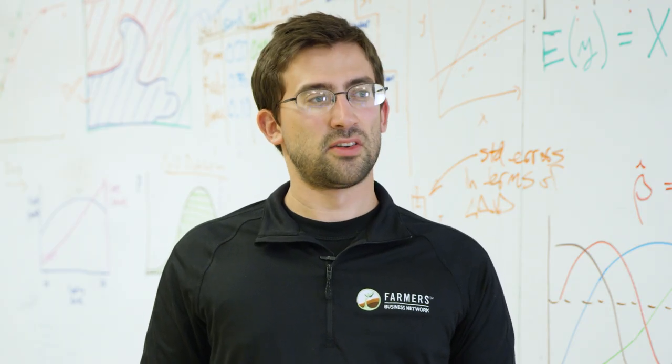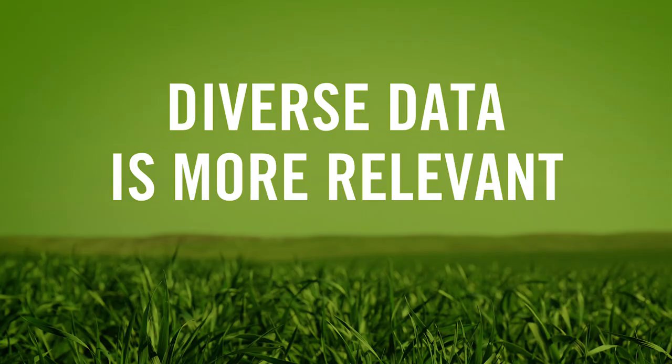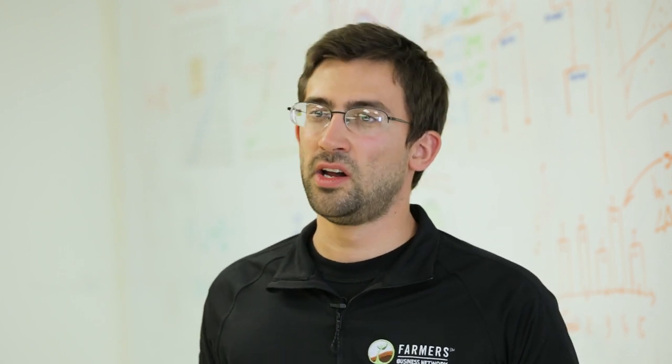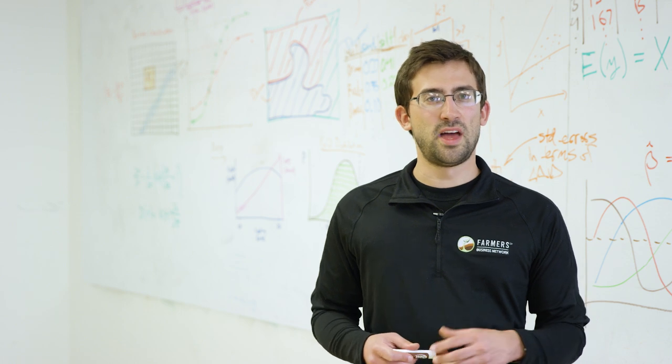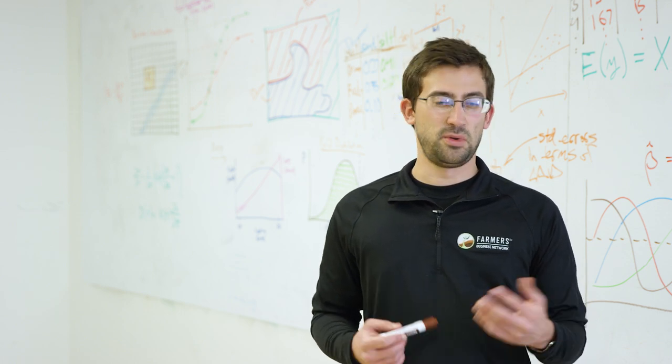The third reason large data sets in agriculture are critical is that by looking at a network of data you integrate data that is diverse. Data from your farm is very relevant for your farm, but only if your growing conditions remain unchanged year to year — and we know that in many cases doesn't happen. If you make decisions based only on your own historical data and then your growing conditions change, your data may actually be very misleading. An example FBN farmer's year-to-year yield variability can be quite large, whereas the FBN average yield across the whole network shows much less variability, leading to better decisions.